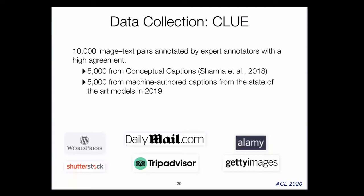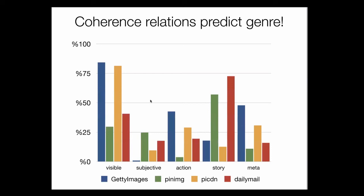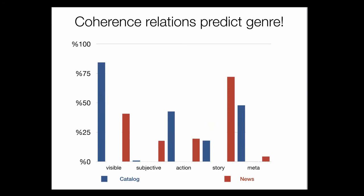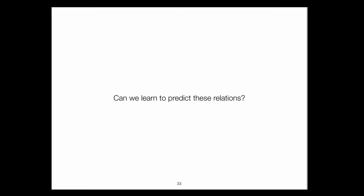This dataset is diverse, including image-text pairs from blog posts, news resources, ads, and so on. Our observation was that coherence relations can predict discourse genre — different image-text pairs from different genres have a different distribution of coherence relations. News resources have a very different distribution compared to catalogs or ads.